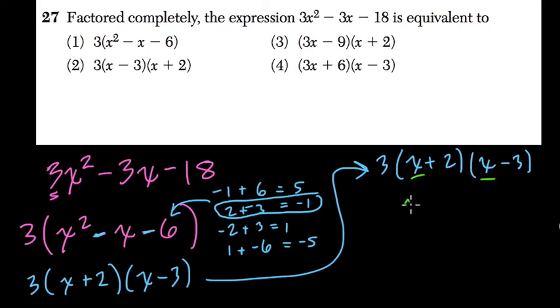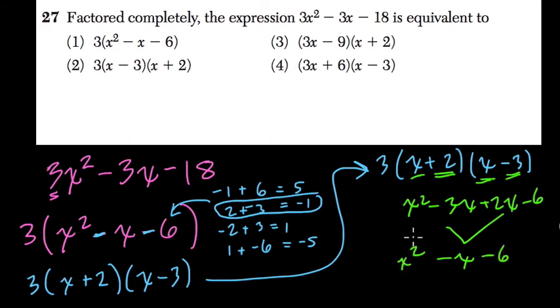So x times x is x squared. x times negative 3 is minus 3x. 2 times x is 2x. And 2 times negative 3 is negative 6. Add up these two, I get minus x. I have negative 6 here and x squared.